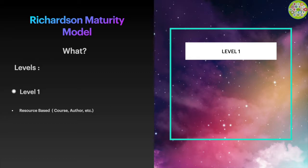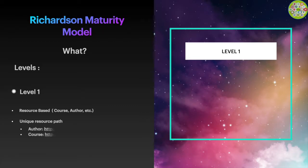Now we know that everything is a resource, so let's move to the second point: unique resource path. Every resource should have a unique path or URL to identify that resource uniquely. For example, this course can be a resource and can be identified by slash course.